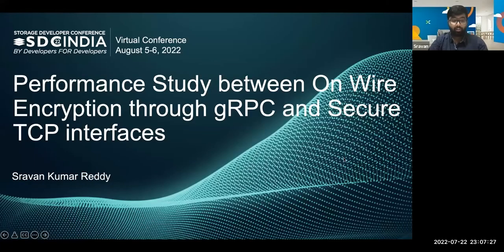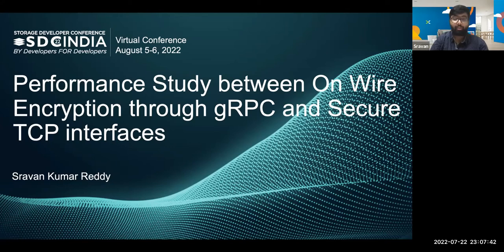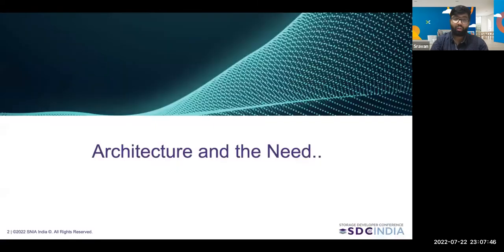Today, I will be discussing our work on the performance study we had done between the on-wire encryption through gRPC interfaces and secure TCP interfaces for data replication. Before we get into the numbers, let me briefly set the context for the presentation. Typically, in distributed systems, based on the types of IOs, the data may have to go over the wire, especially in our use case of replication.